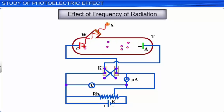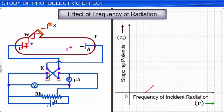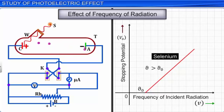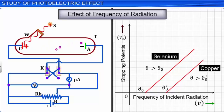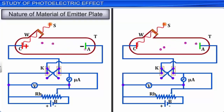Threshold frequency ν₀ is the minimum frequency of the incident radiation required to just cause photoelectric emission from a metal surface. The threshold frequency is different for different materials of the emitter. This means that although the stopping potential varies in a linear fashion with the frequency of the incident radiation, for a certain minimum frequency the stopping potential is observed to be zero. For the same intensity and frequency of light capable of causing the photoelectric effect on different emitters, the photoelectric current remains the same, which proves that photoelectric current is independent of the material of the emitter.